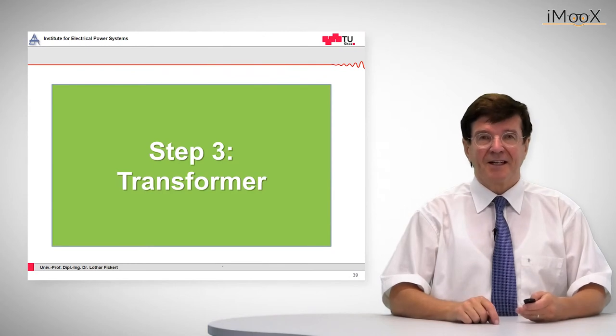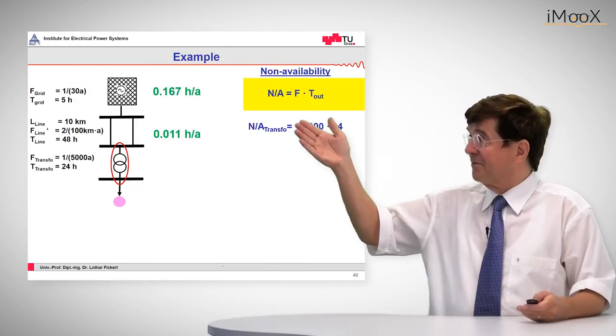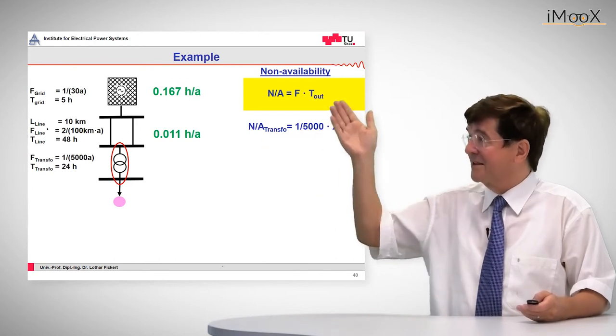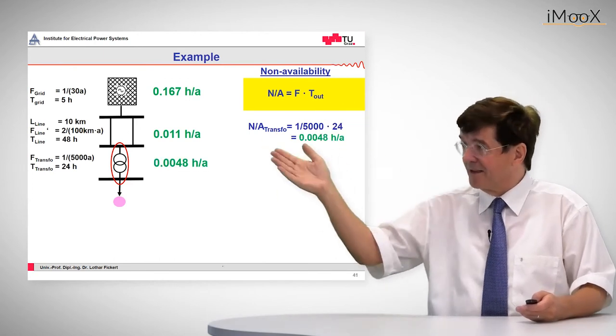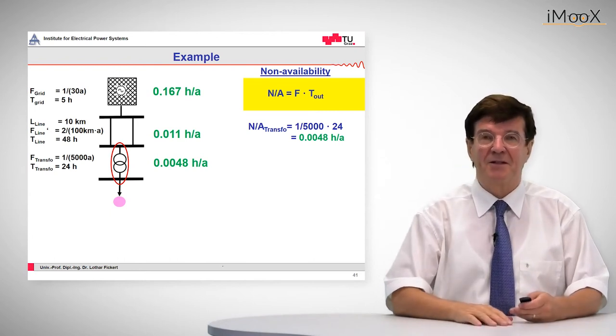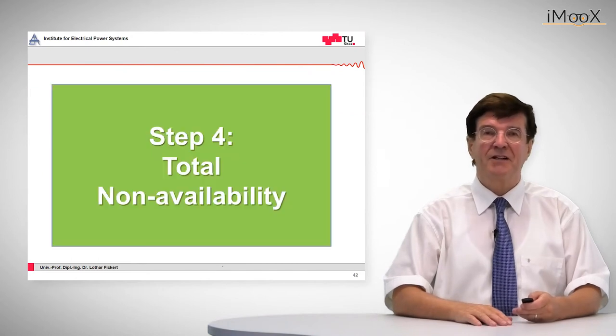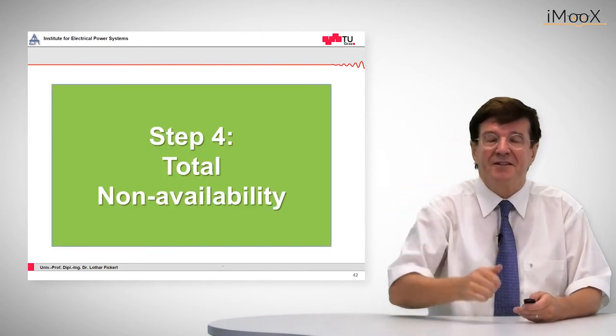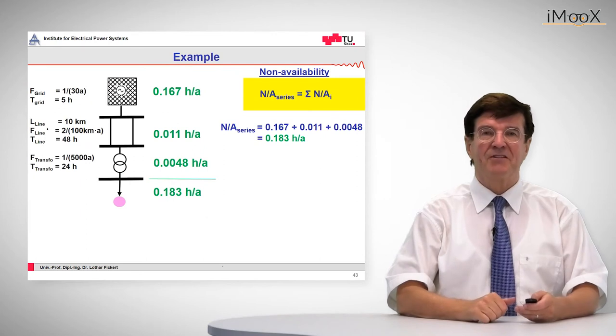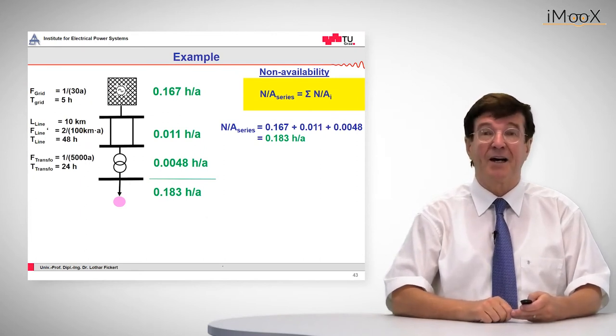Element number 3 is the transformer, obtained by frequency times average outage time. This has a non-availability of 0.048 hours per year. The total non-availability of these serial elements is the sum, which comes out as 0.183 hours per year.